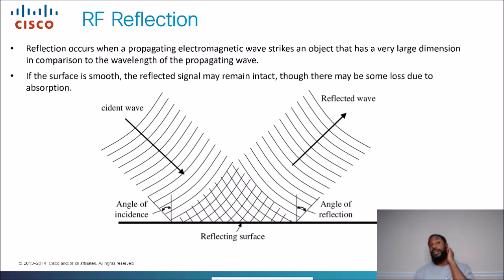RF reflection. Reflection occurs when a propagating electromagnetic wave strikes an object that has a very large dimension in comparison to the wavelength of the propagating wave. So if you look at this picture right here, and this is why I usually just grab pictures because it's easier to see them. You can't really physically see radio waves or anything like that. So if you've got these waves right here, it's bouncing off of this reflecting surface. It could be like a mirror or something like that, a wall or something. The reflecting surface will be, the wave will just bounce off. You see the wave just bouncing off the reflecting surface. That's where reflection is. If the surface is smooth, the reflected signal may remain intact. There also may be some loss due to absorption, which we'll talk about in another slide.